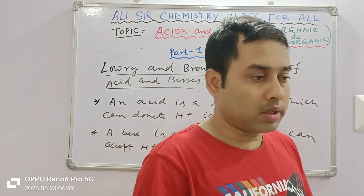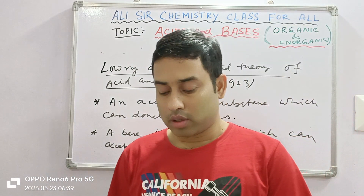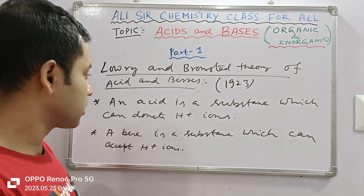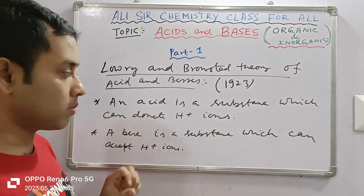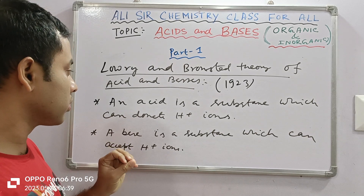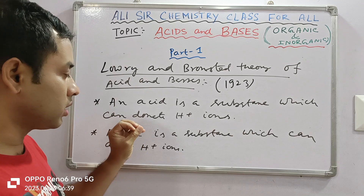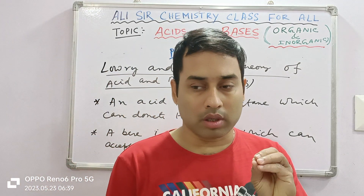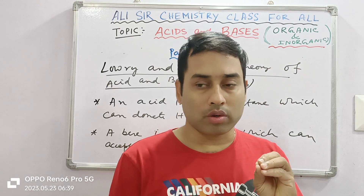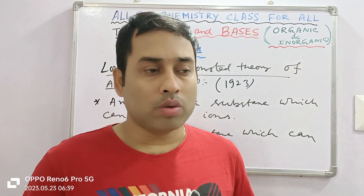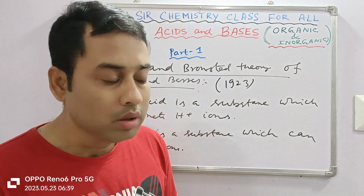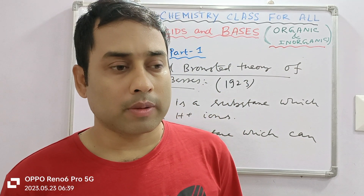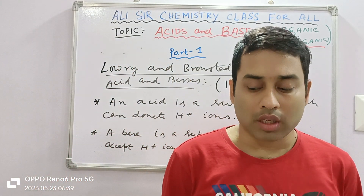The Bronsted-Lowry theory is a little bit more advanced compared to Arrhenius theory. The first advantage is that no specific solvent is indicated here — this is not solvent-specific. Here the theory is generalized with only the proton H+. The compound which is an H+ ion donor is called an acid, and the compound which is an H+ ion acceptor is called a base. This theory is more generalized compared to Arrhenius theory.